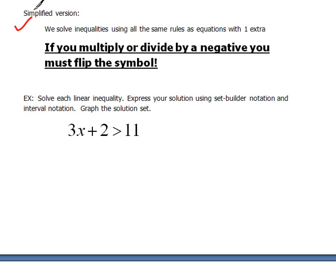So for instance, if I had negative 3x is less than 6, then when I divide both sides by negative 3 to get the x alone, I've got x on the left and 6 divided by negative 3 would be negative 2. But because we divided by that negative, we have to flip the inequality over to greater than.